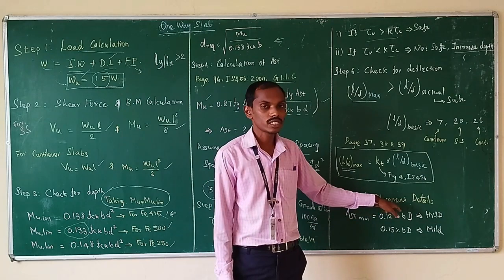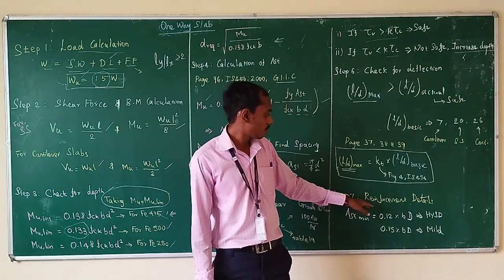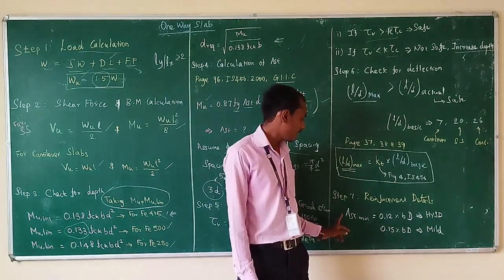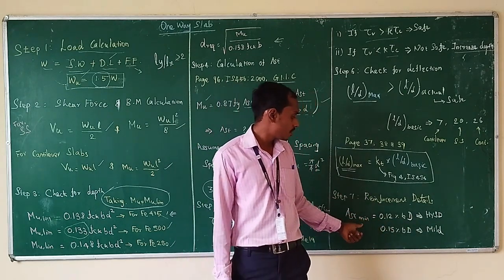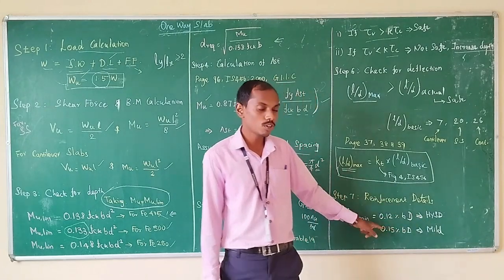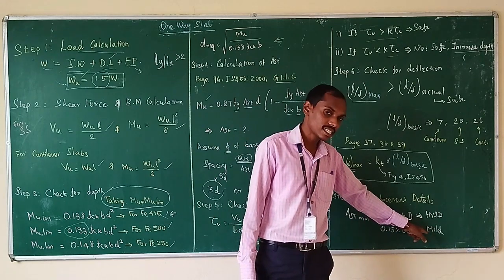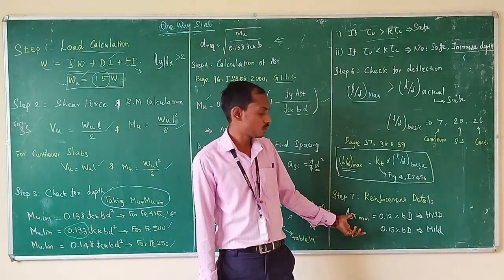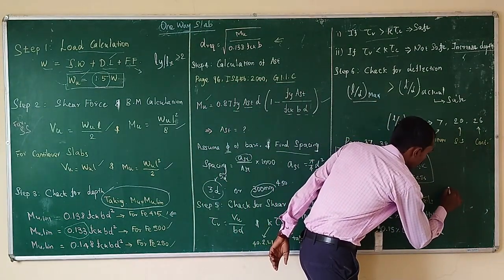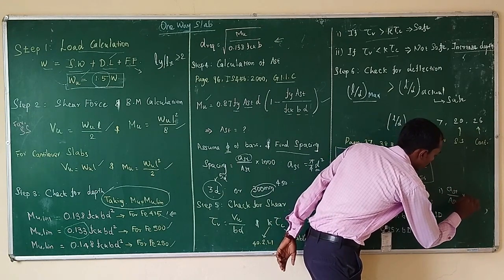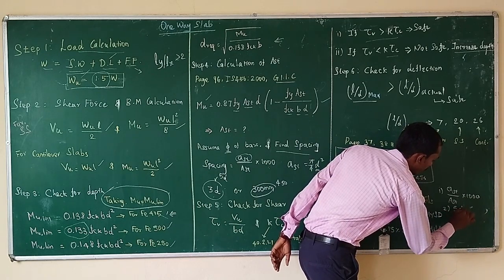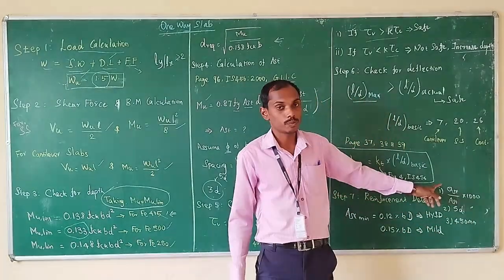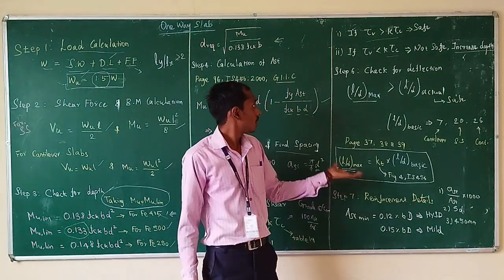The last step is to draw the reinforcement detail and find the area of distribution reinforcement. The minimum AST for HYSD bars is 0.12% of the gross cross-sectional area (b × D), and for mild steel, AST minimum = 0.15% of b × D. The spacing for distribution reinforcement is the least of: (i) (ast / AST) × 1000, (ii) 5 times the effective depth, and (iii) 450 mm. The least of these three values gives the spacing for secondary reinforcement. This is the complete procedure to design a one-way slab.